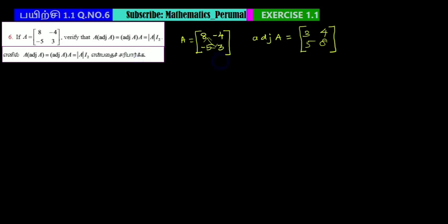Next, we will find A times adjoint of A. Matrix A is [8, -4; -5, 3] and adjoint of A is [3, 4; 5, 8]. For first row, first column: 8 times 3 equals 24, minus 4 times 5 equals 20.